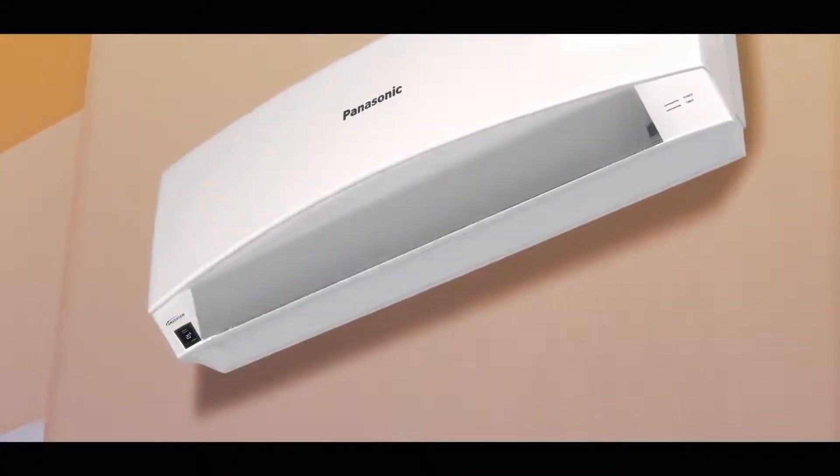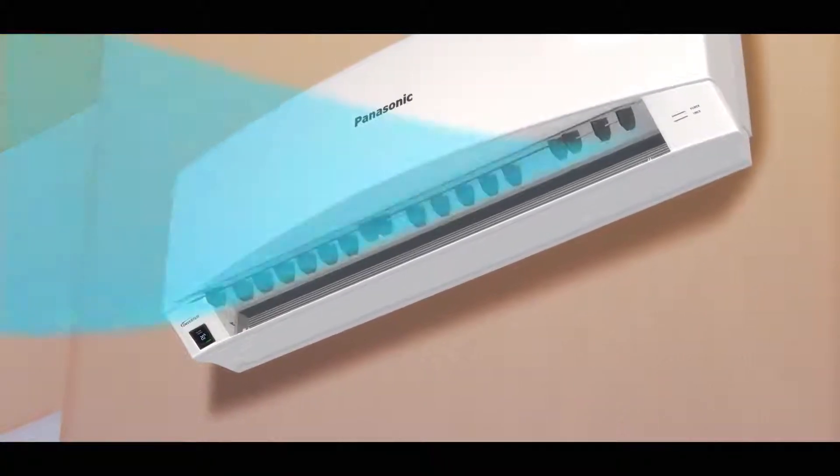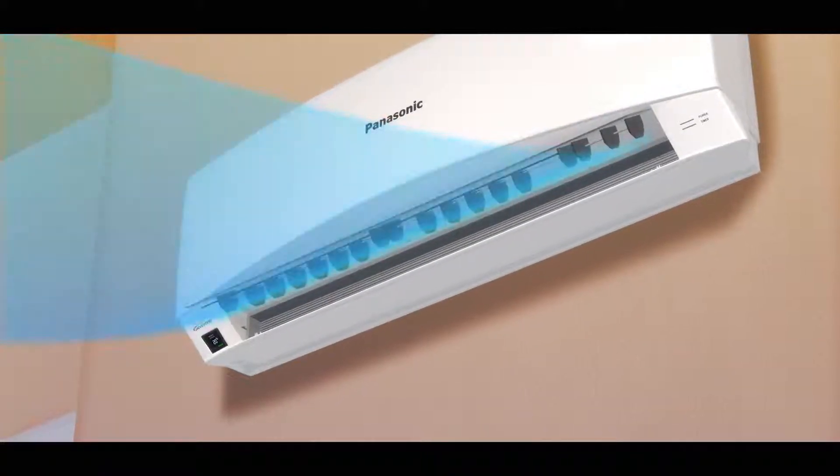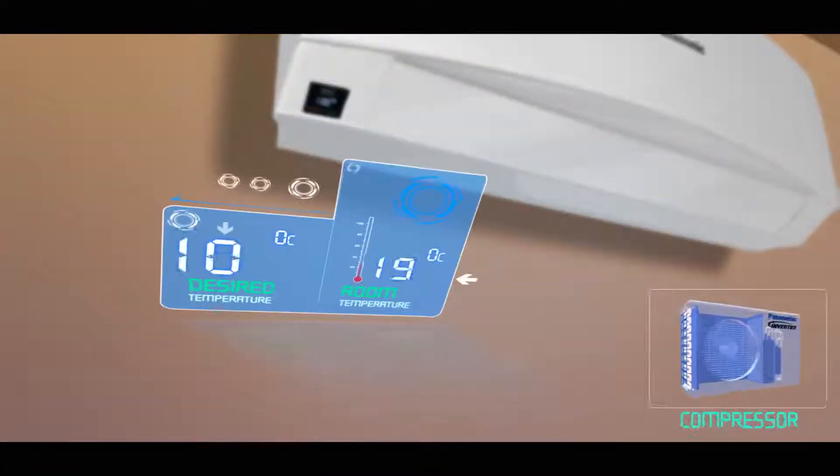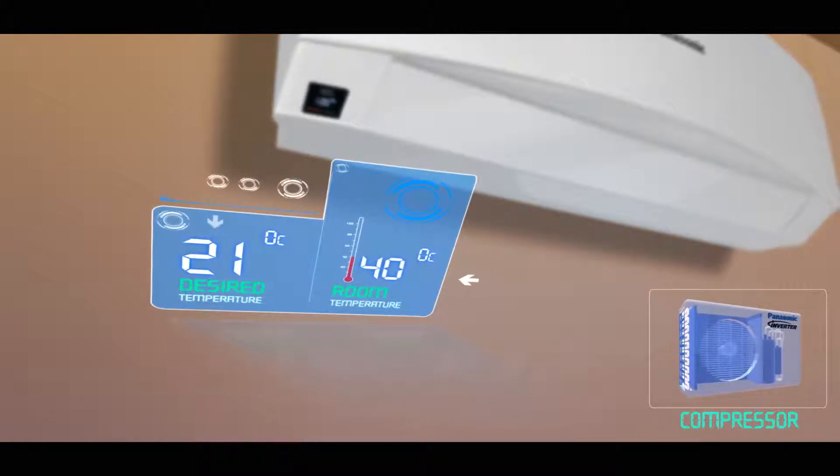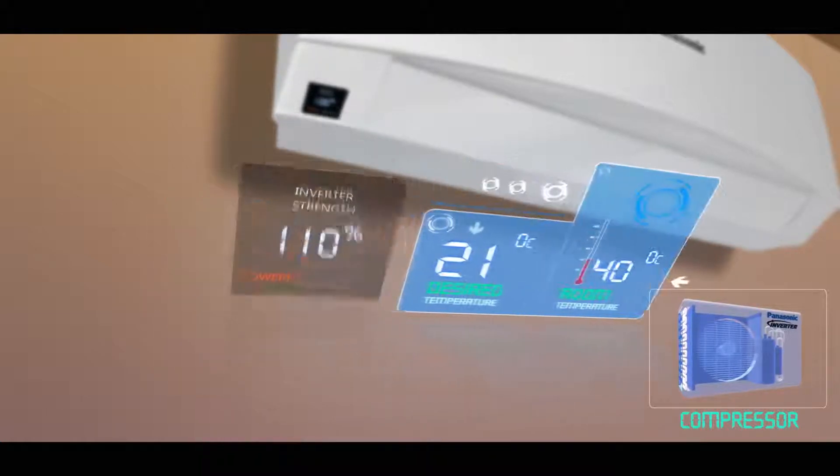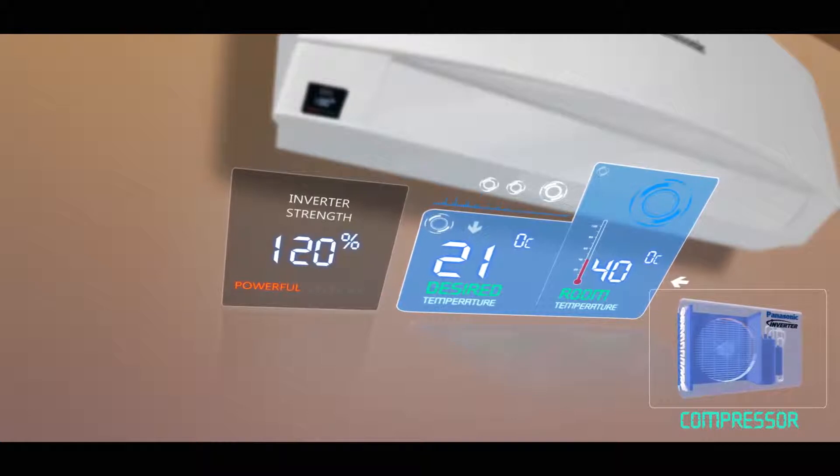As an air conditioner is turned on, powerful cooling is required in the beginning as the ambient temperature is quite high compared to the desired temperature. The air conditioner has to work at 110 to 120 percent of its capacity.